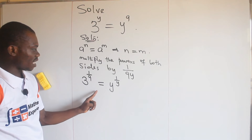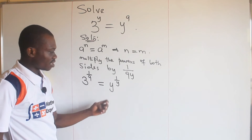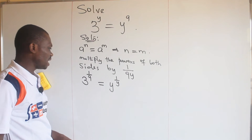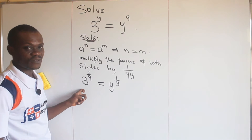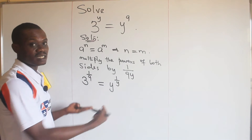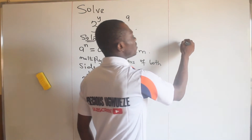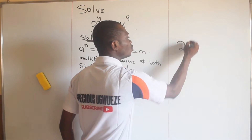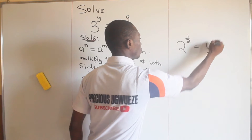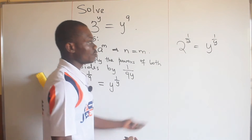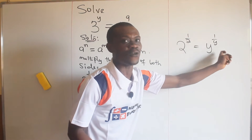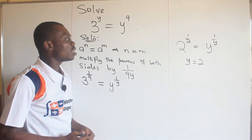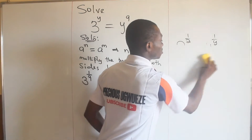Studying the problem we have now, from the right hand side you'll discover that the base is exactly the same as the denominator of the power. So if I can also write the left hand side to look like this, then whatever is in the place of y becomes the value. For instance, if I can write two raised to the power of one over two equal to y raised to the power of one over y, the base is the same as the denominator of the power, and y would be two.